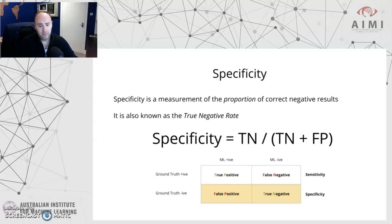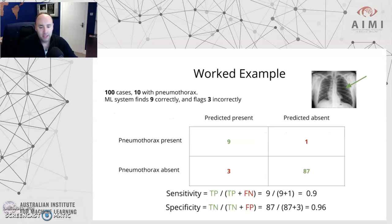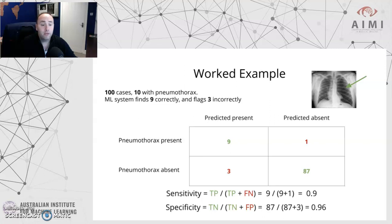Let's do a worked example. Let's say we have 100 chest X-ray cases, and 10 have been ground-truthed as having a pneumothorax, while the other 90 don't. We run our ML system on these 100 cases, and the system finds 9 out of the 10 correctly — so it's finding 90% of the ones that are actually there. It also flags 3 of the remaining 90 as incorrectly having pneumothorax. We can put those numbers into our confusion matrix. The number predicted present and actually present is 9, placed in the top-left box. That means the one it missed is 1, since there were 10 with pneumothorax and it found 9.